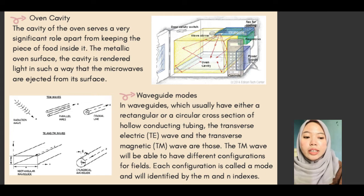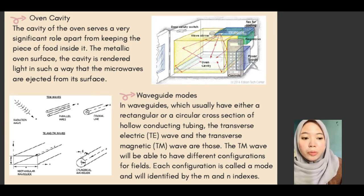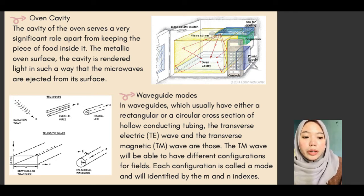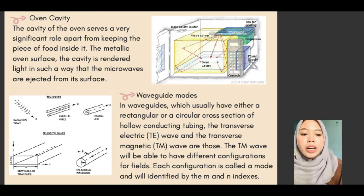The last component is the waveguide. A waveguide usually has either a rectangular or circular cross-section of hollow conducting tubing. The transverse electric wave, TE, and the transverse magnetic wave, TM, are the modes. The TM wave can have different configurations. Each configuration is called a mode and is identified by the M and N indexes.